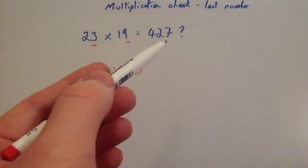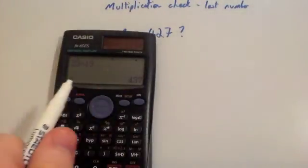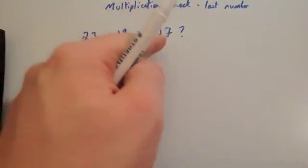The answer does end in a 7, so it doesn't mean it is wrong, but it doesn't necessarily mean it's right. If you were to do 23 times 19, the answer is actually 437. So this number here should be a 3.